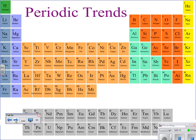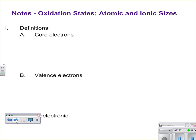Now we get into periodic trends. We can see a lot of information if we just look at the periodic table — it tells us a lot of trends. We're going to start with a bunch of definitions. Core electrons are the electrons that are not valence electrons — in other words, the electrons in lower energy levels.